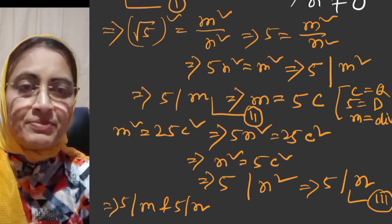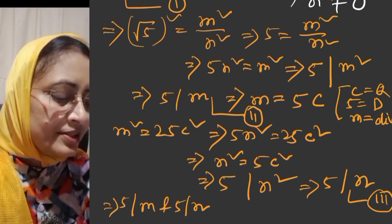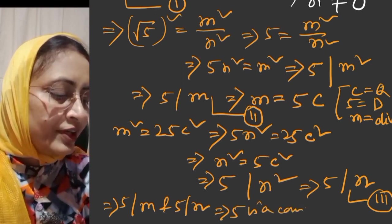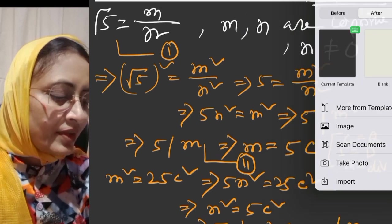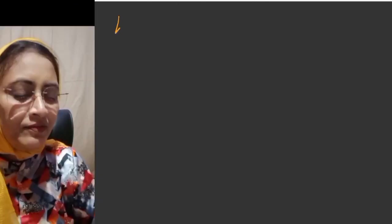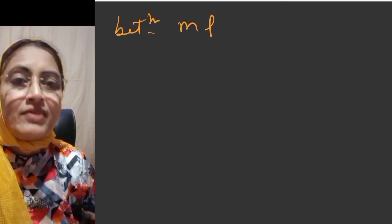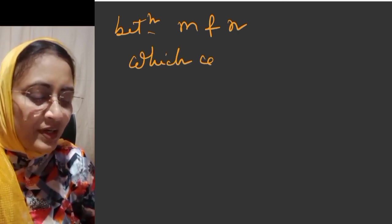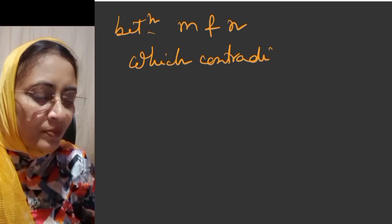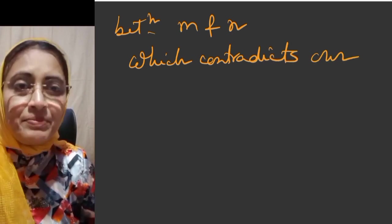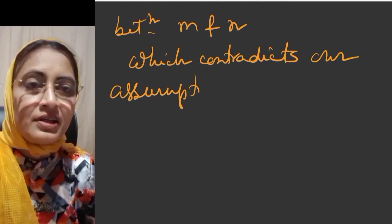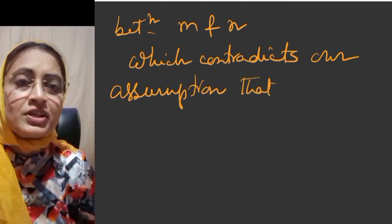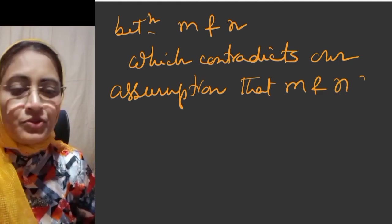5 divides m and 5 divides n means 5 is a common factor between m and n, which contradicts our assumption that m and n are coprime. The definition of coprime means there can't be any common factor between two numbers.